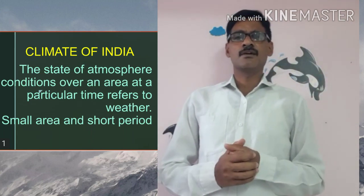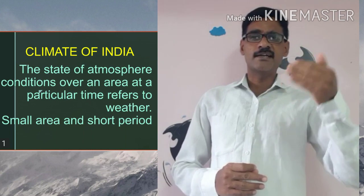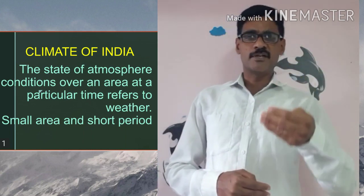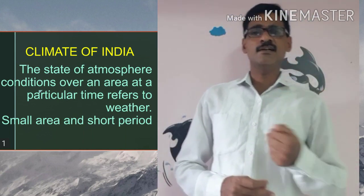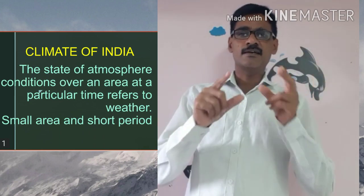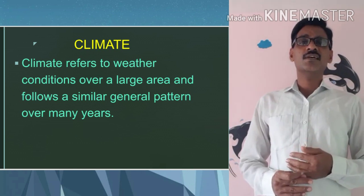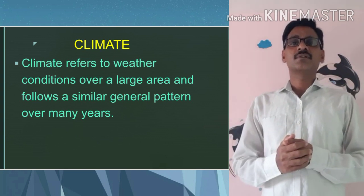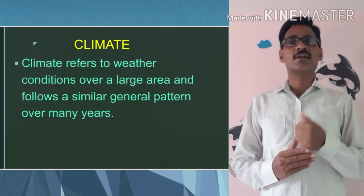So what is weather? Weather is the state of atmospheric conditions of elements like sunshine, temperature, humidity, precipitation, atmospheric pressure, clouds, etc., over an area in a particular period. Climate refers to weather conditions over a large area for a long period — 30 years or more than 30 years is called climate.